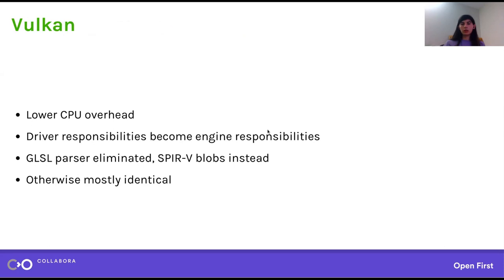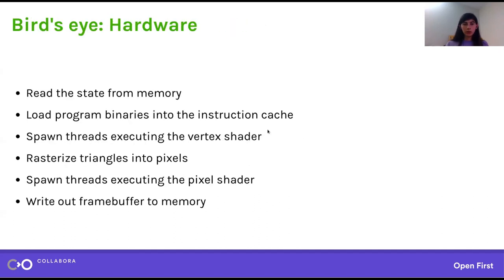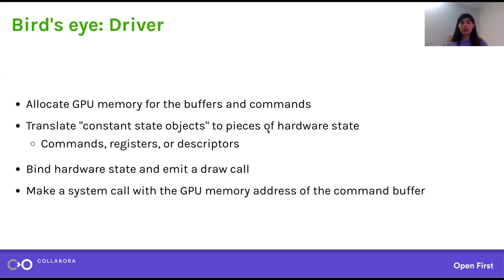I promised I would talk about Vulkan, which is the new hot stuff on the block. The whole promise of Vulkan is that a Vulkan application can have lower overhead than an OpenGL application. It's important to qualify this: what's actually being talked about is CPU overhead. The goal of the Vulkan API is to reduce the amount of complexity in the user space driver.